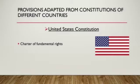The Bill of Rights is a list of rights mentioned and protected by the Constitution. The Indian Constitution guarantees six fundamental rights to Indian citizens: 1. Right to Equality, 2. Right to Freedom, 3. Right against Exploitation, 4. Right to Freedom of Religion, 5. Cultural and Educational Rights, and 6. Right to Constitutional Remedies.